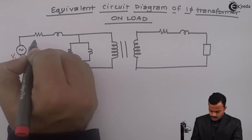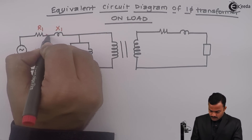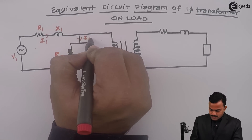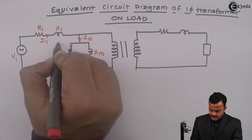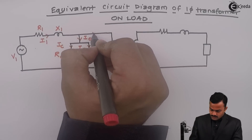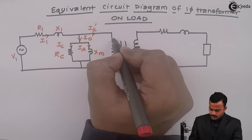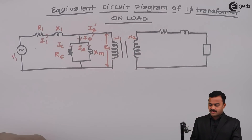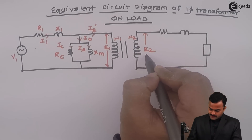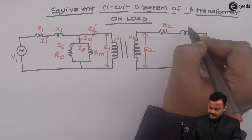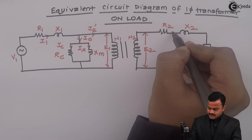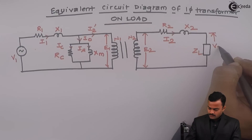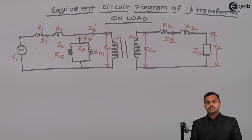Let's label the circuit. V1 is the supply voltage, R1 is primary resistance, X1 is primary leakage reactance, and I1 is the primary current. Rc is the core loss resistance, Xm is the magnetizing reactance, and I0 is the no-load current. The current through Rc is Ic, and through Xm is Imu. The current I2' flows from the primary into the ideal transformer. Because of N1 turns we get induced EMF E1. The same flux links with N2 turns to give secondary induced EMF E2. R2 is the secondary winding resistance, X2 is the secondary leakage reactance, I2 is the secondary current, ZL is the load impedance, and V2 is the voltage across ZL — the terminal or secondary voltage of the transformer.